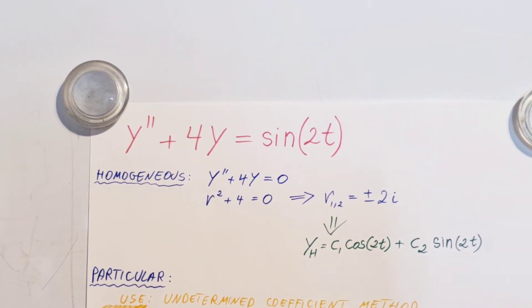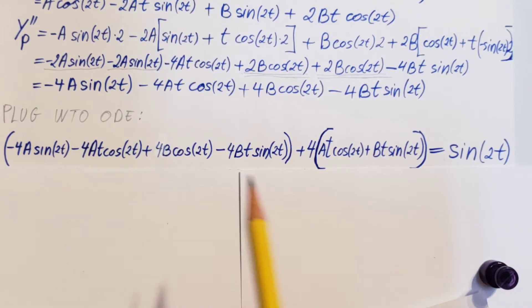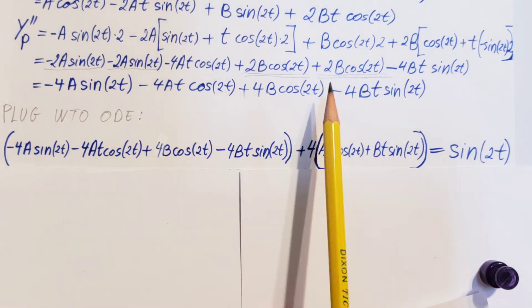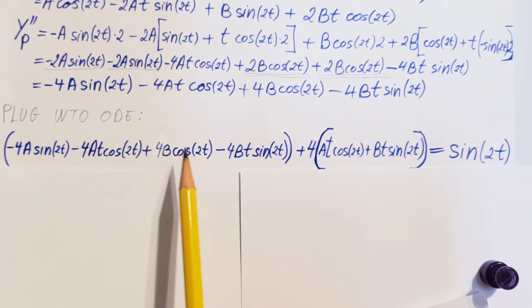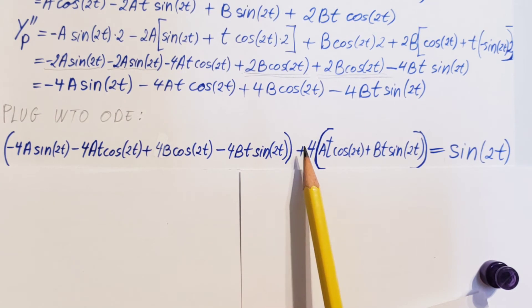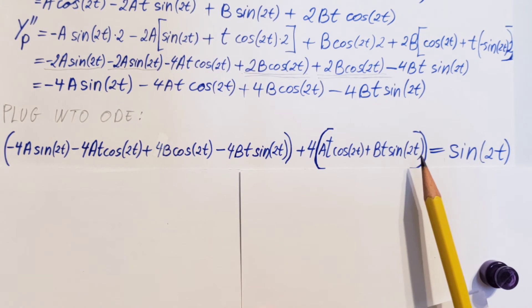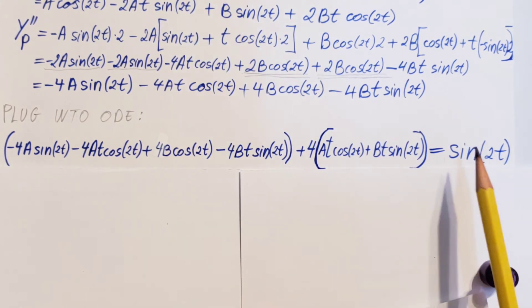Into our original ODE. Whatever we got here, we're gonna plug it in instead of y double prime. Then, we have plus 4. We had a y. So, this is what we plugged in instead of the y. And on the right hand side, sine 2t. Nothing changed.